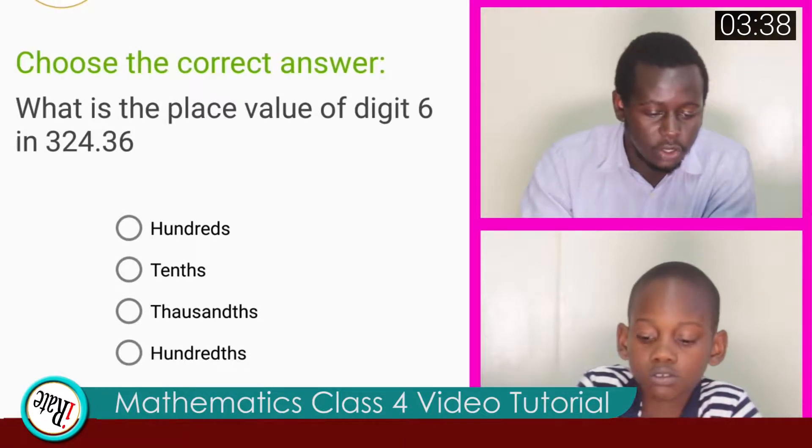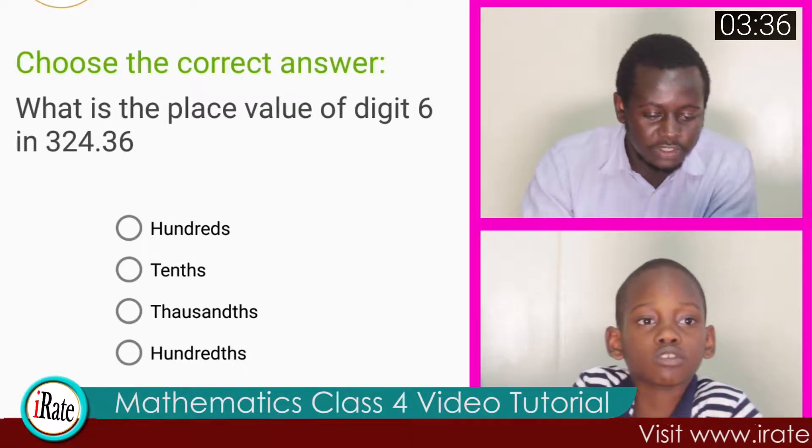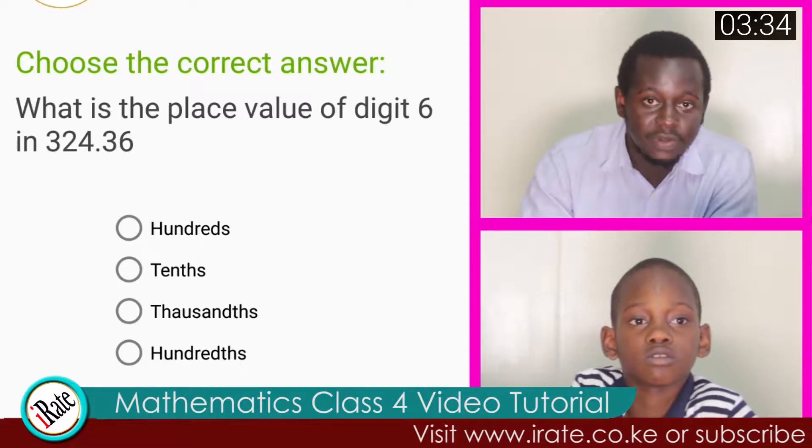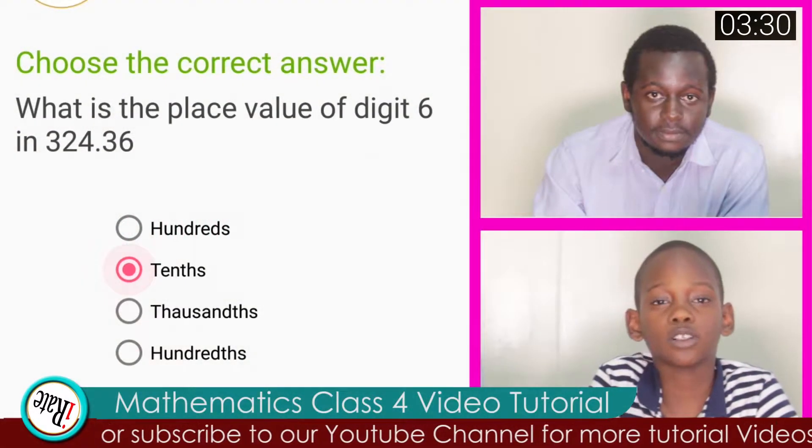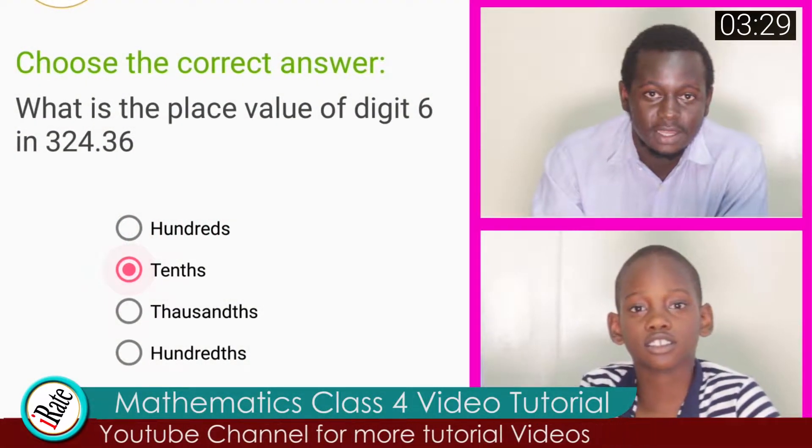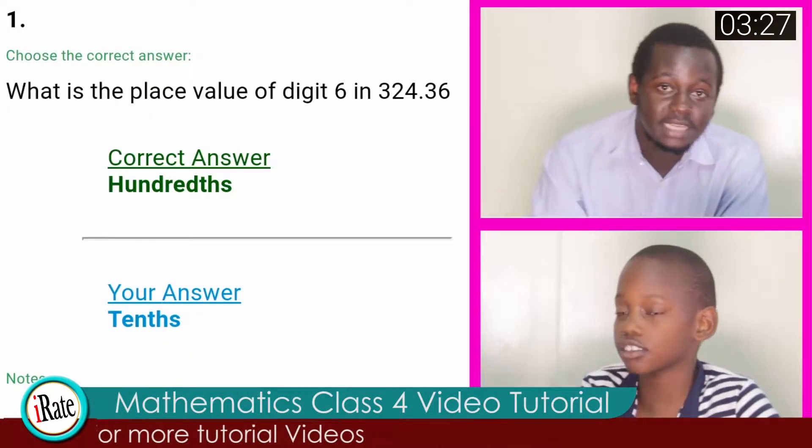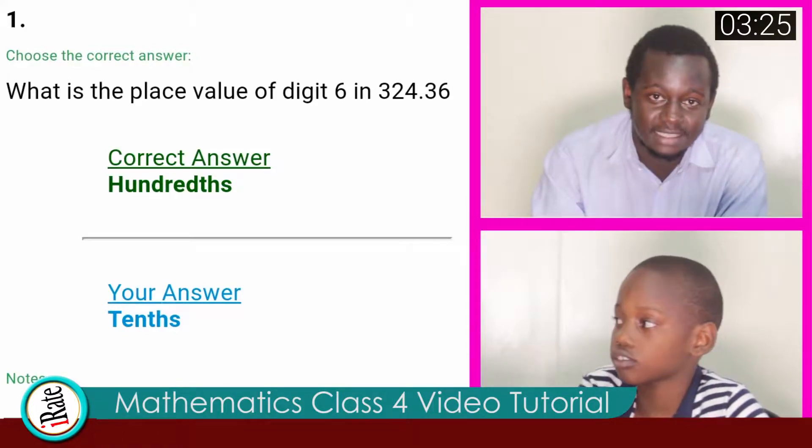Question number one. Choose the correct answer. Which is the place value of digit 6 in 324.36? The answer to question number one is tenths. No. Actually, the correct answer is hundredths and not tenths.